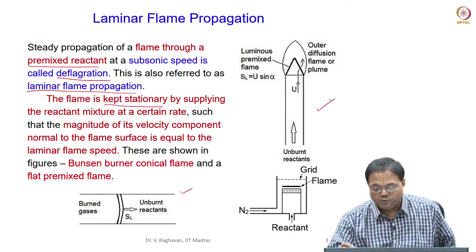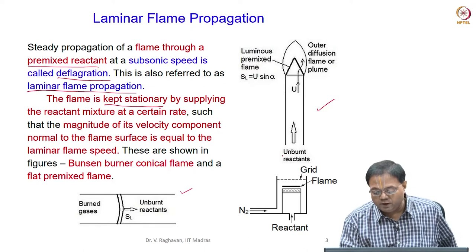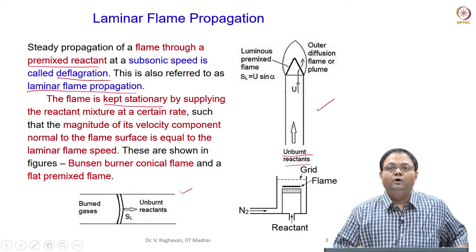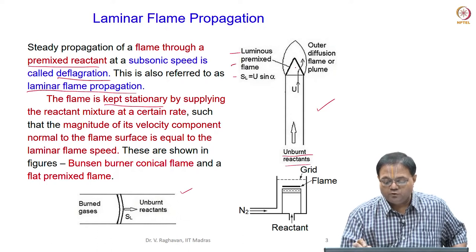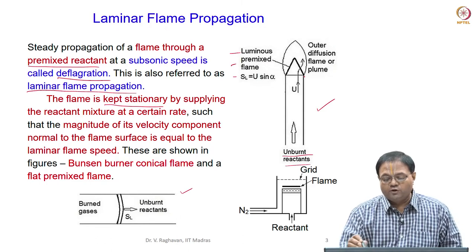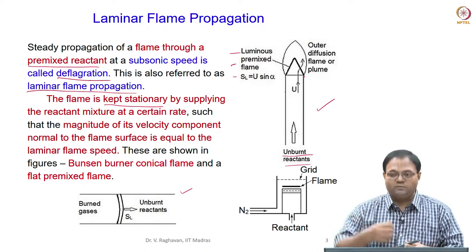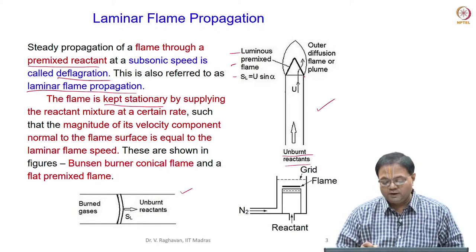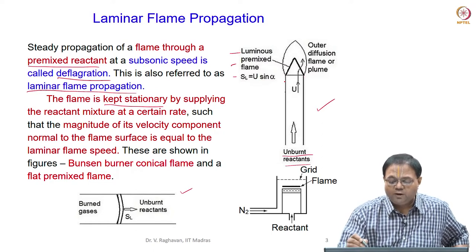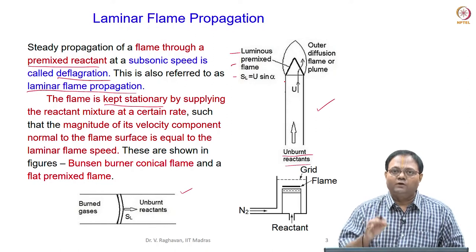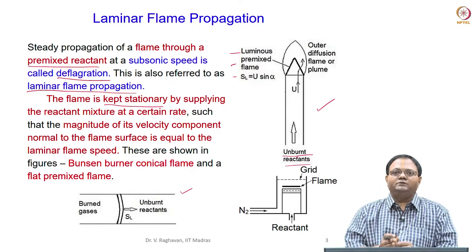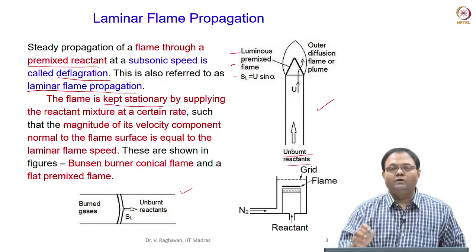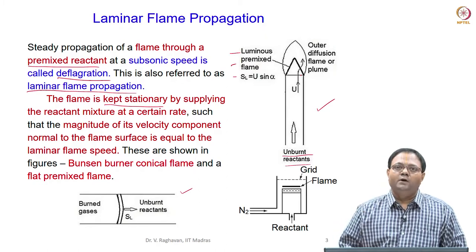One example is the Bunsen burner, where unburnt reactants enter and pass through a duct or port, and at the exit a luminous premixed conical flame forms over the Bunsen burner. The flame is stationary and stands over the end of the duct. By supplying the unburnt reactant at a particular rate or a given range of flow rates, we can achieve such stationary flames over the exit of the burner.